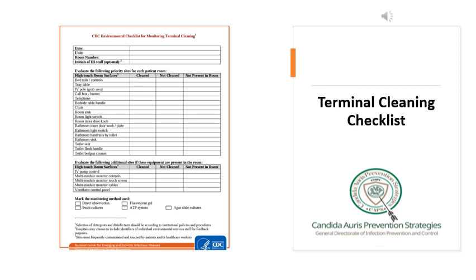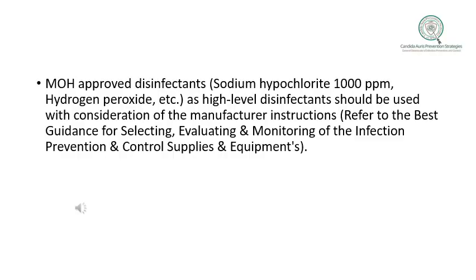Performing cleaning and disinfection activities requires specific logs, checklists, or posters to help and support housekeeping staff in performing activities effectively. This slide shows the checklist for terminal cleaning covering all high-touch surface areas and low-touch surface areas in the room of a patient colonized or affected with Candida auris, to ensure all potentially colonized surfaces are covered. Using the MOH-approved high-level disinfectant — such as sodium hypochlorite at 1,000 ppm or hydrogen peroxide at 4–6% and above — is critical to avoiding transmission and eradication of Candida auris.